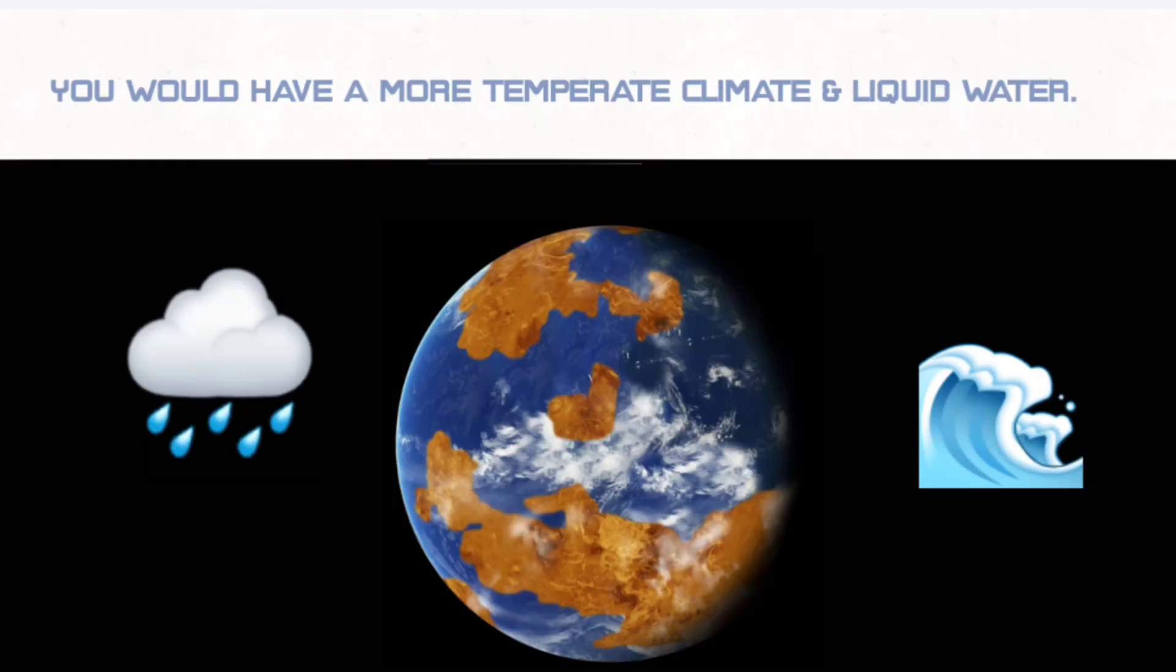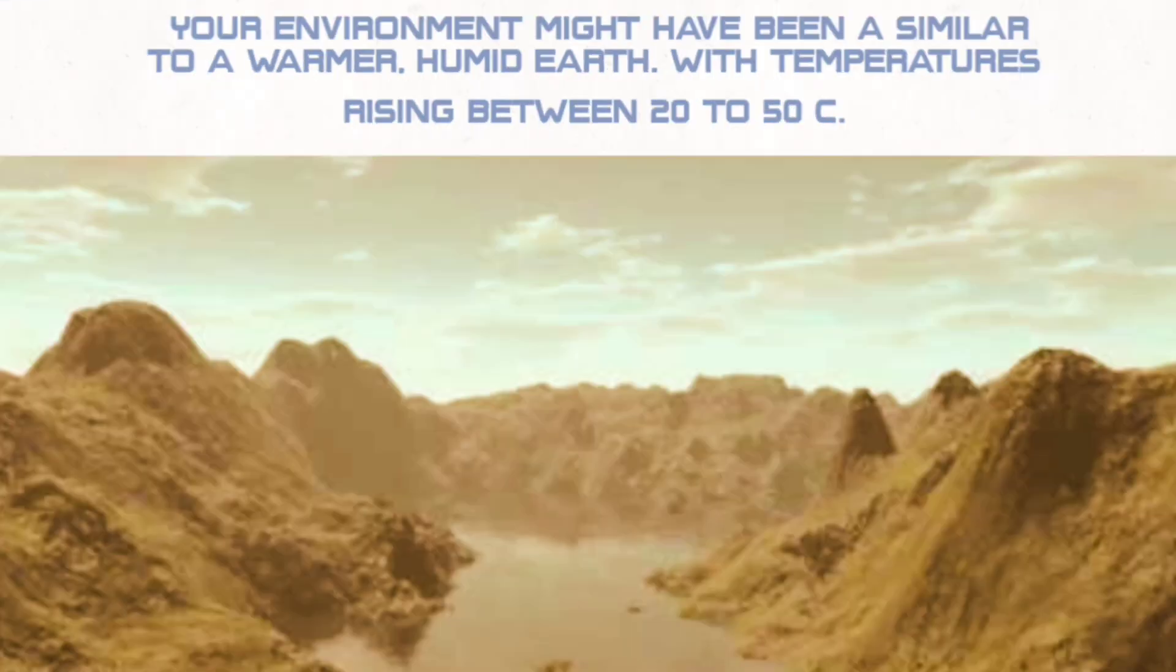Let's start with Venus. You would have a more temperate climate and liquid water. Your environment might have been similar to a warmer, humid Earth, with temperatures rising between 20 to 50 degrees Celsius.